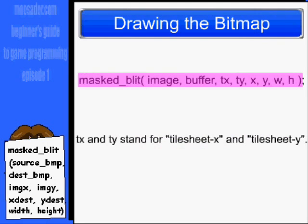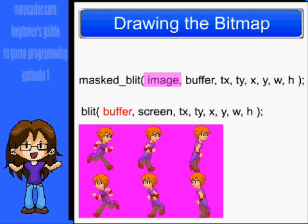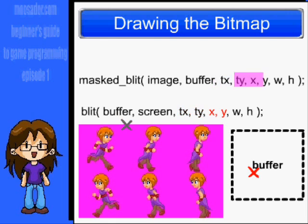Here's the code for drawing the image to another image, which is our buffer. This function is similar to the one we used to draw the buffer to the screen, but it doesn't have a mask. masked_blit takes: the image to draw, the destination image, the x and y coordinates on the source bitmap to begin drawing from, the x and y coordinates to draw to on the screen, and the width and height of the image.